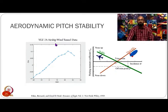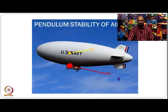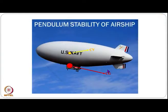Looking at the aerodynamic data for an actual airship — YZ2A, which was an experimental airship — we have the CM (pitching moment coefficient) versus the angle of attack. We see that it is an unstable curve because the slope is positive. So airships are aerodynamically unstable in pitch. As mentioned earlier in the dynamics lecture, we have pendulum stability in airships: the CG hangs under the center of volume, which looks like a simple pendulum, and because of this we have this stability.